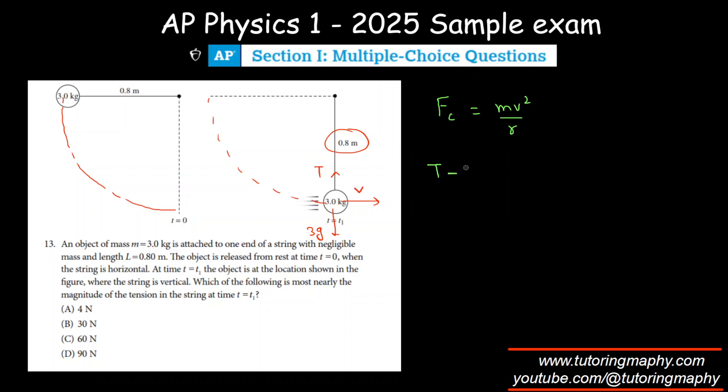That has to equal m which is 3, times v that we don't know, over r which is 0.8. Assuming g is 10, it will be T minus 30 equals 3 over 0.8. That's 3.75, not as nice but okay. I'm going to write 3.75v².